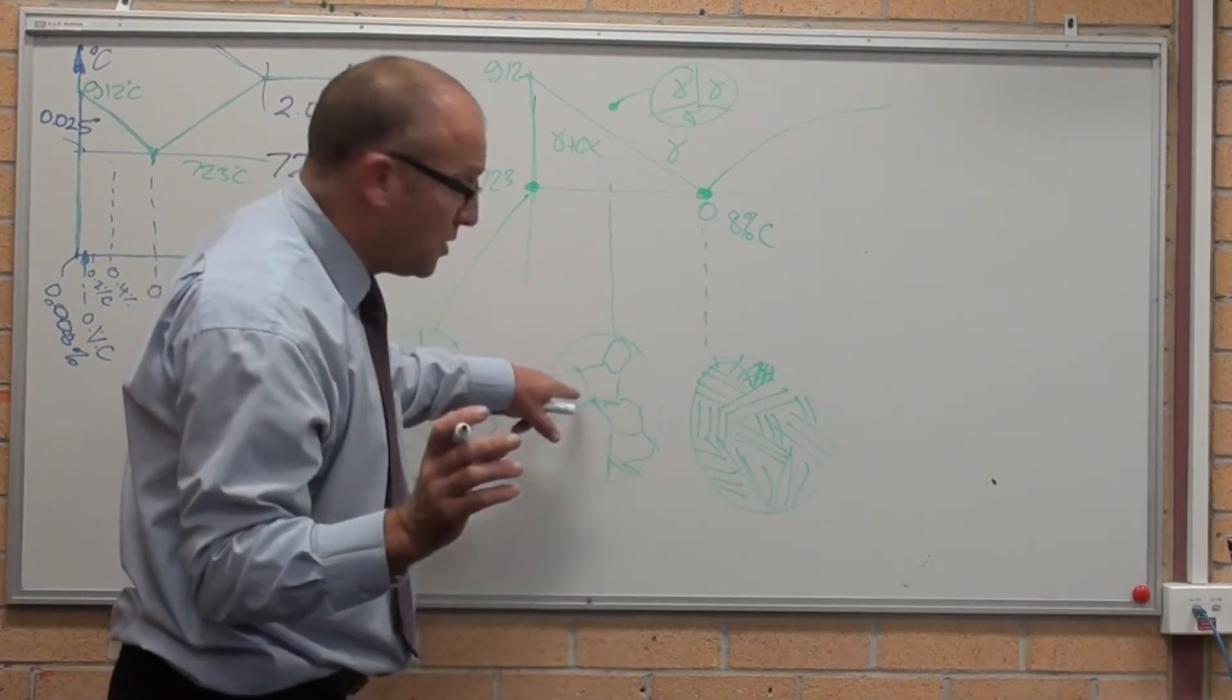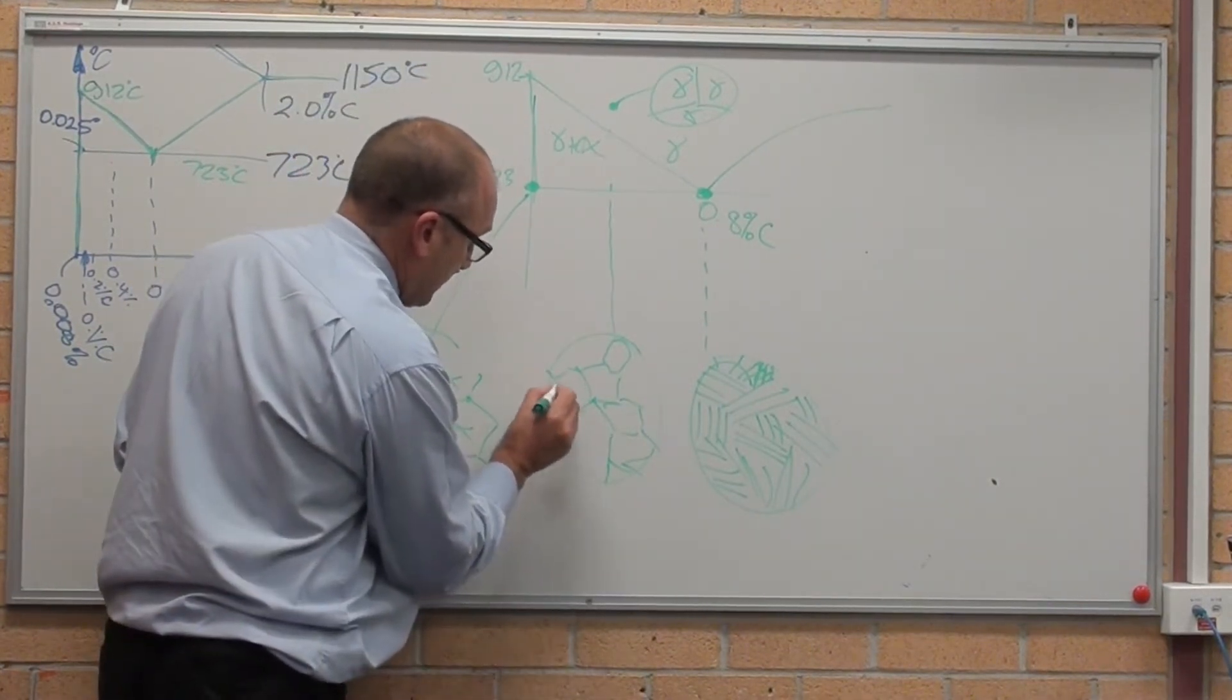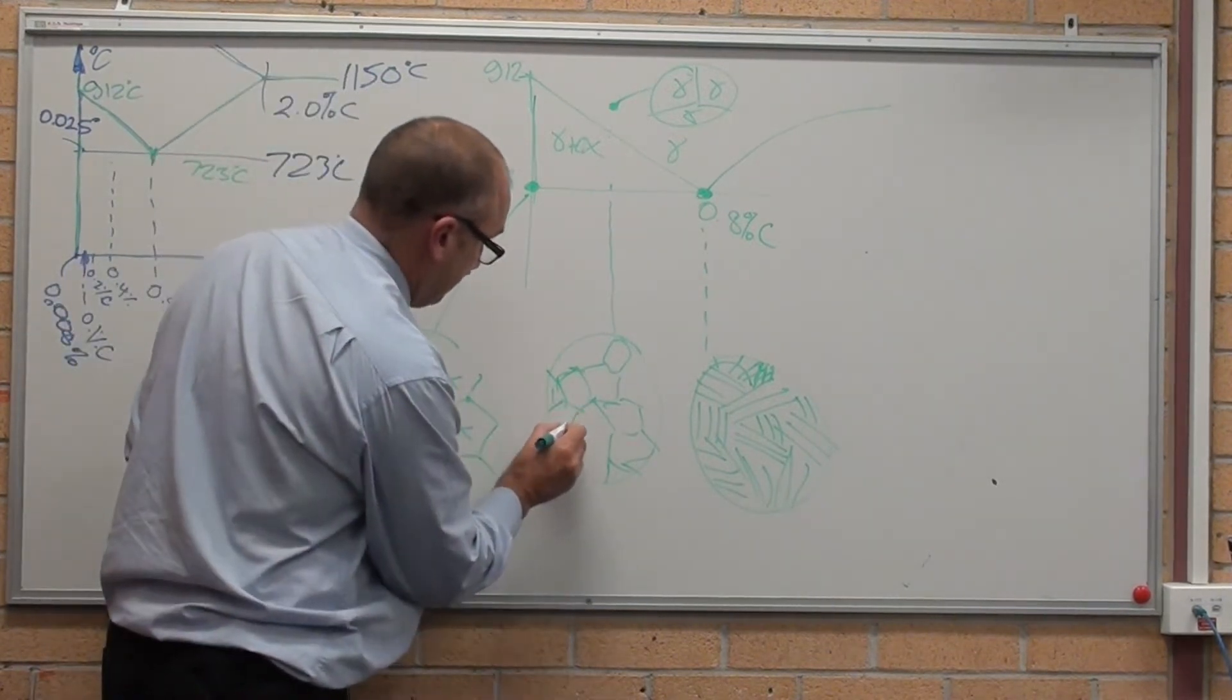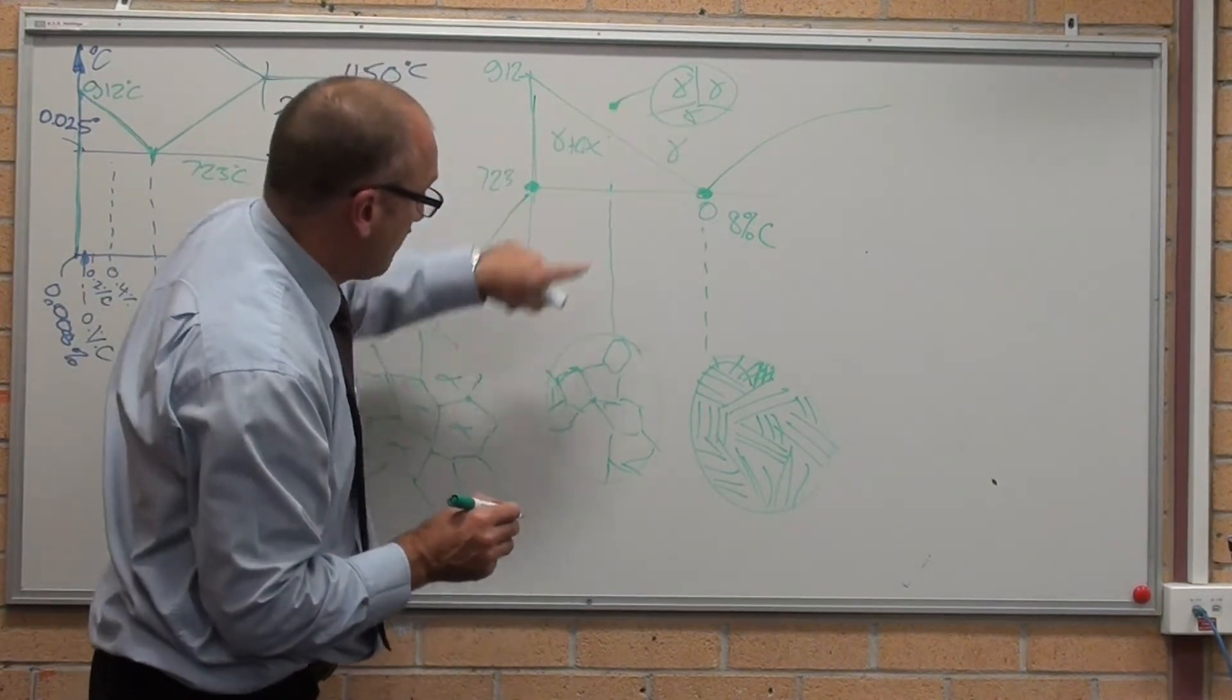So that ferrite nucleates and grows on the high energy areas, which are the grain boundaries, the austenite grain boundaries.